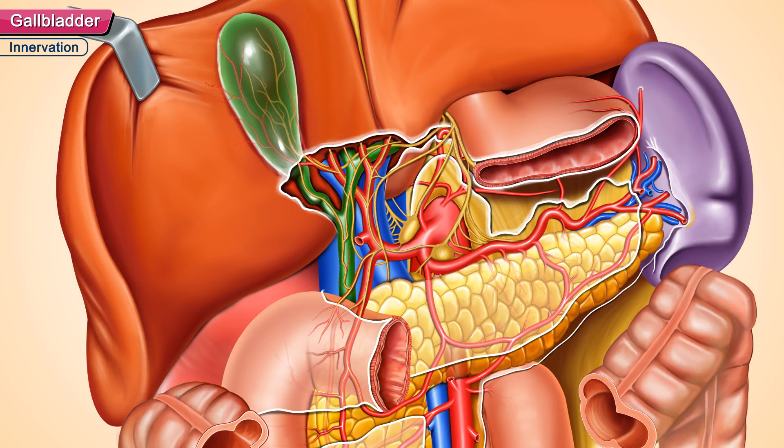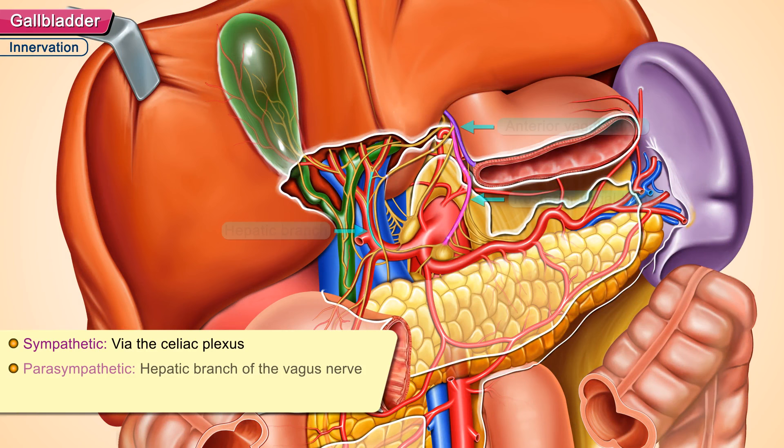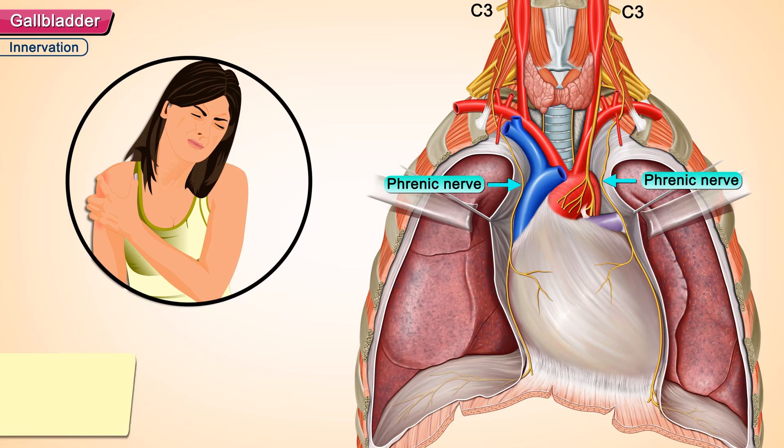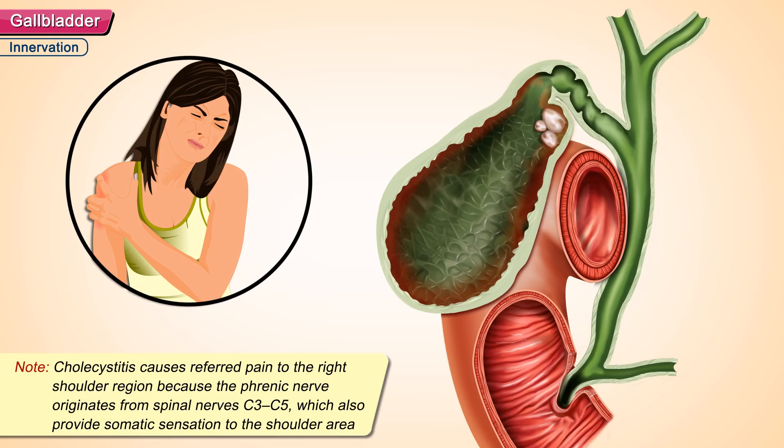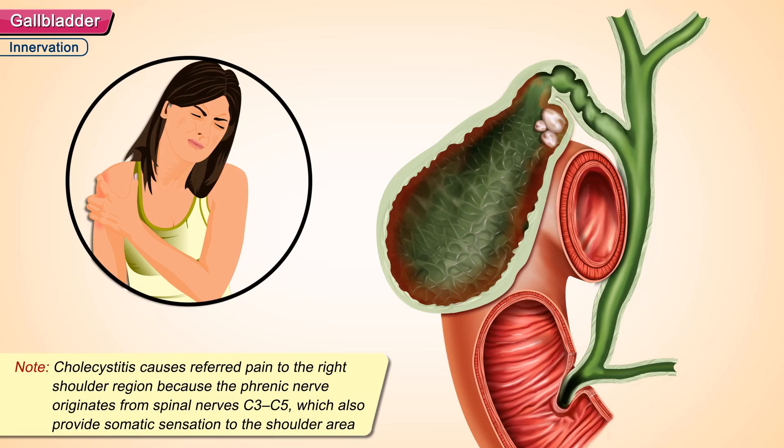Innervation: Sympathetic innervation is via the celiac plexus. Parasympathetic innervation is via the hepatic branch of the vagus nerve. Sensory fibers come from the phrenic nerve; hence, referred pain to the right shoulder area via C3 nerve fibers. Cholecystitis causes referred pain to the right shoulder region because the phrenic nerve originates from the spinal nerves C3 to C5, which also provides somatic sensation to the shoulder area.